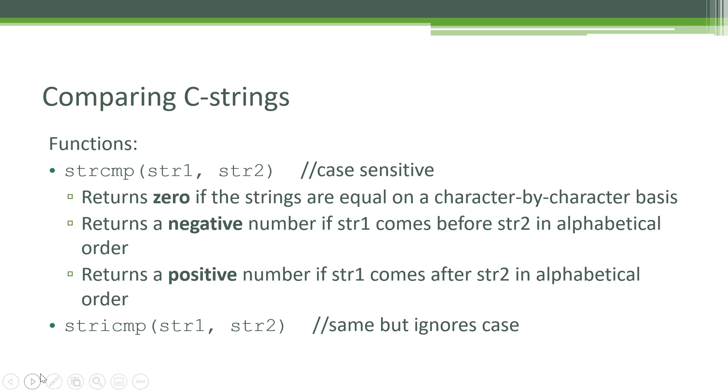strcmp is another function that we looked at in the program. It returns zero if the strings are equal, and that can be a little surprising because zero equates to false. But they chose to implement it to return zero if it's equal so they could use the negative and positive number results to indicate whether it's less than or greater than. If it's negative, string one is less than string two. If it's positive, string one is greater than string two.